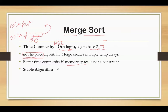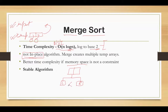Merge sort is a stable algorithm because when we do the merging, we check whether the element in the right array is greater than the element in the left array. In this way it preserves the relative ordering of duplicate elements present in the given input array.